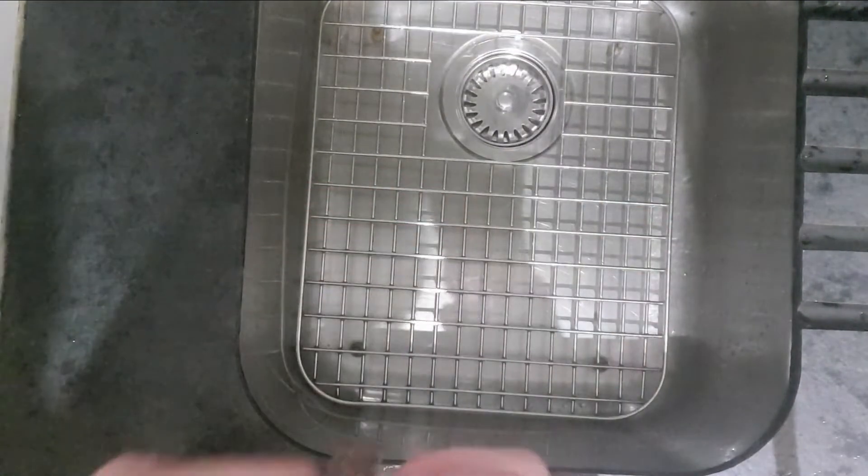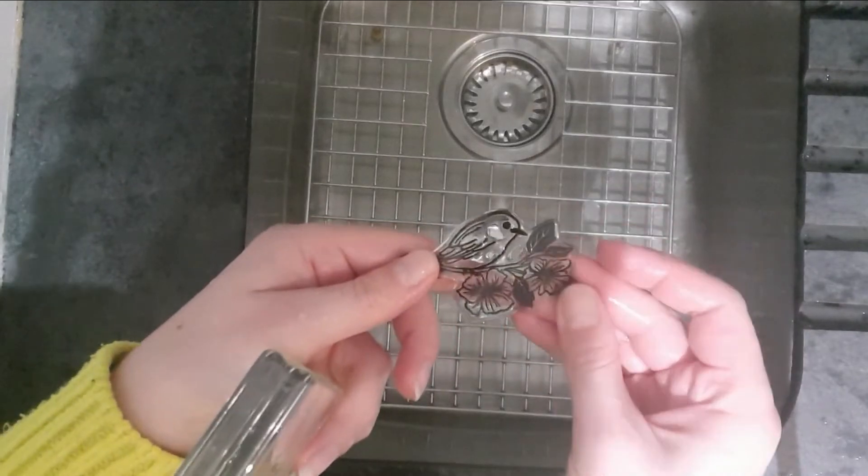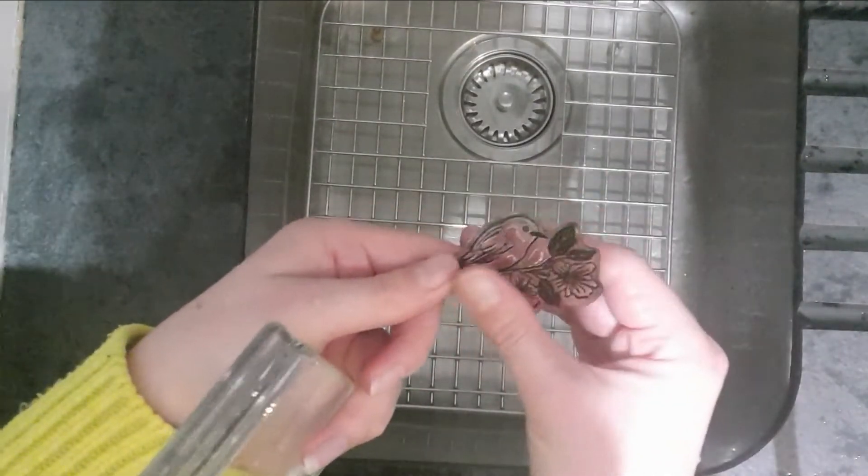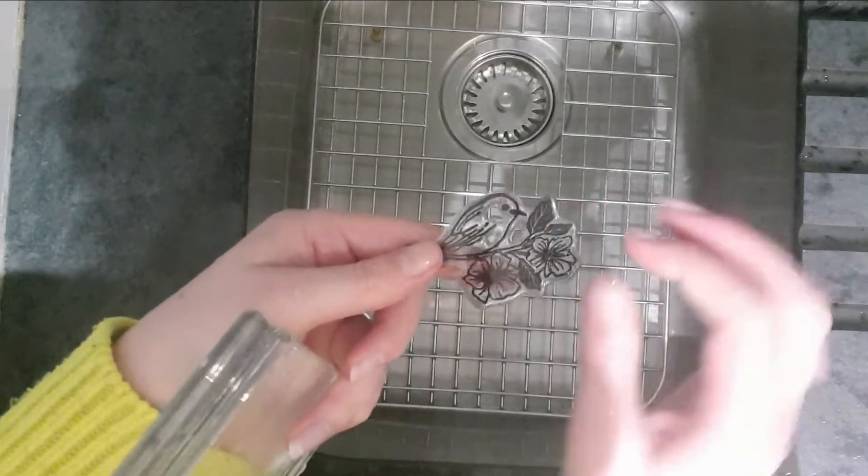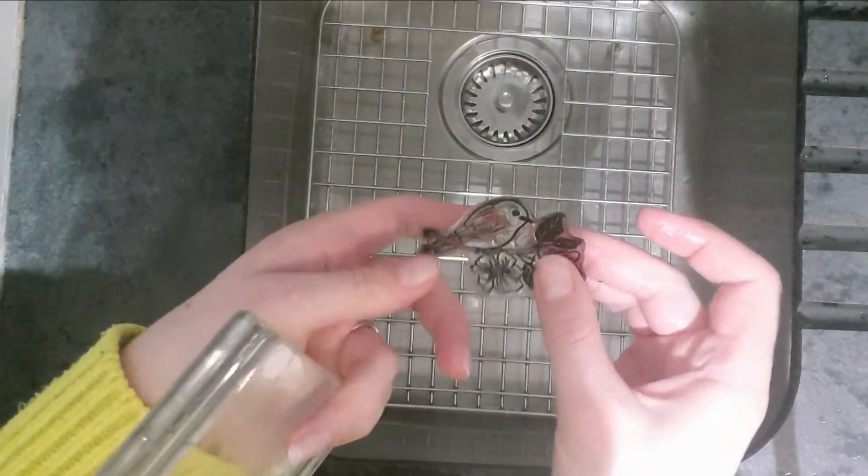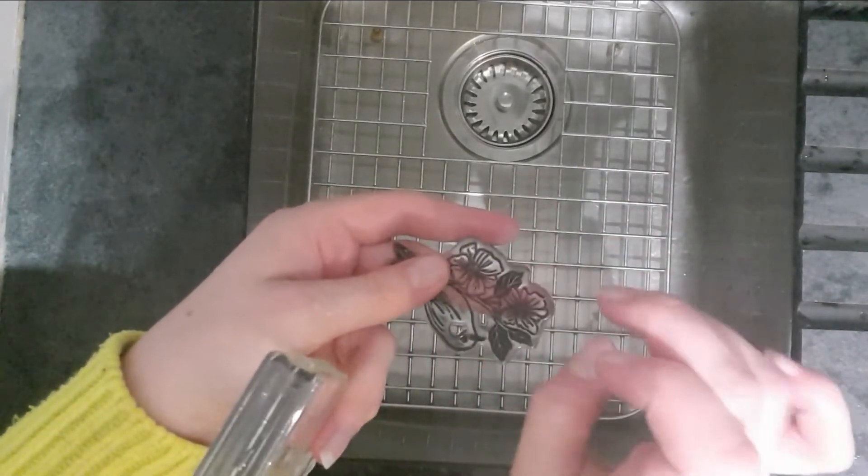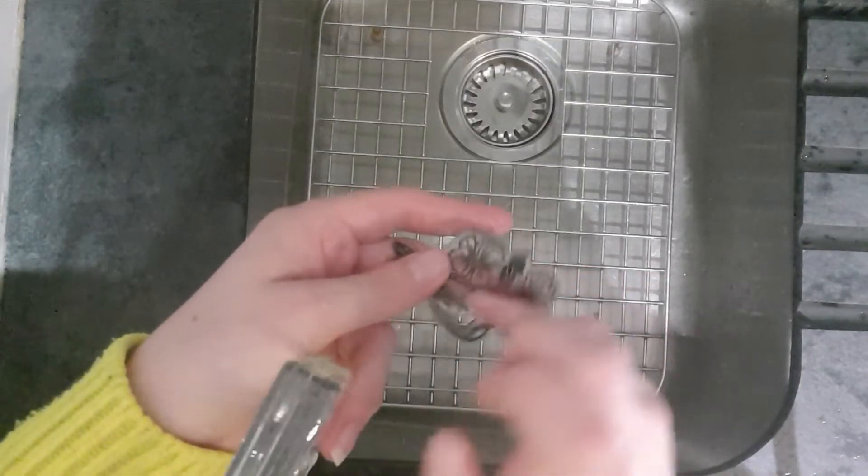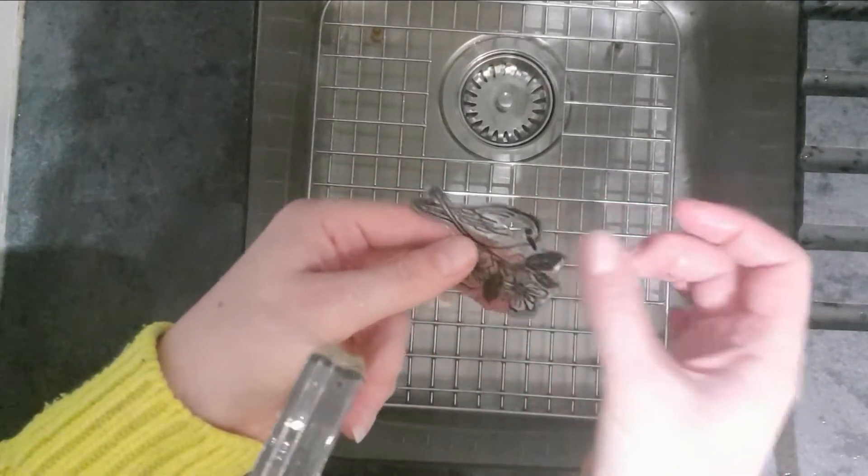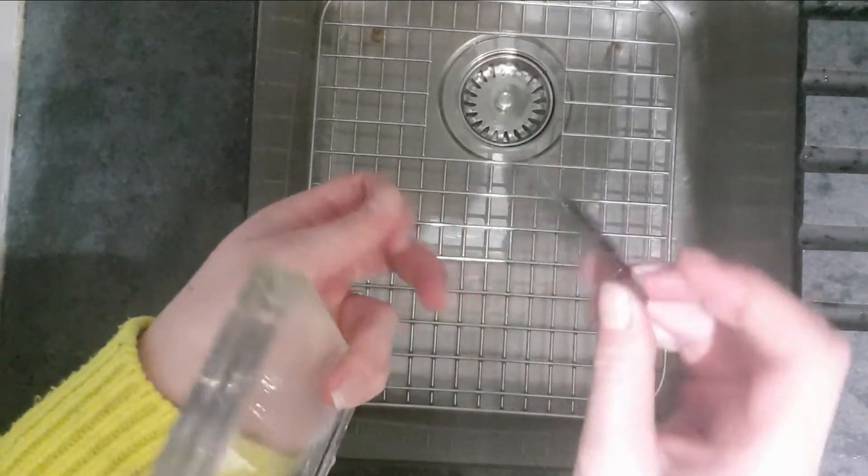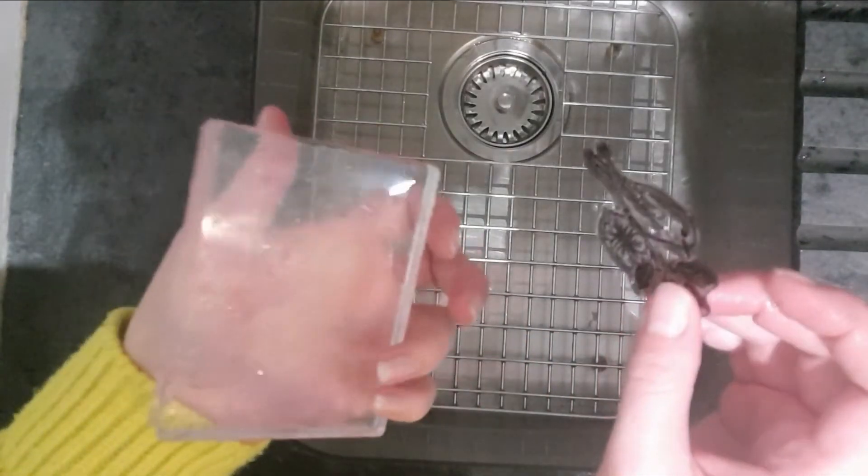One thing I would suggest against is using anything with any kind of fibers on, any fibrous cloths or kitchen paper or anything like that to clean your stamps, because it might leave little fibers on your stamps that will then mean that it doesn't leave such a crisp image next time. So I would suggest clean water and your stamp chamois.